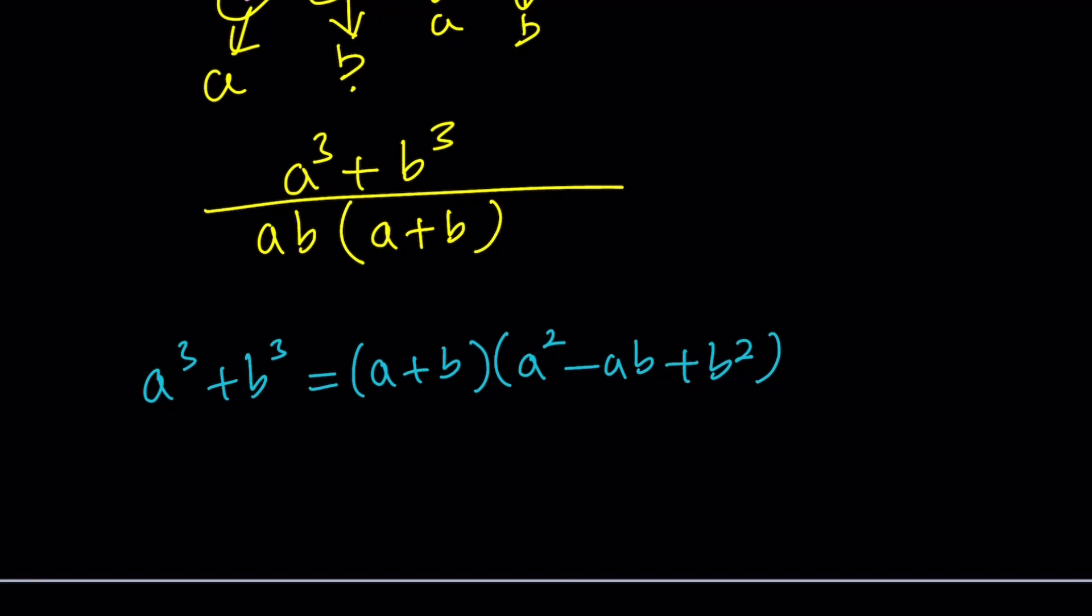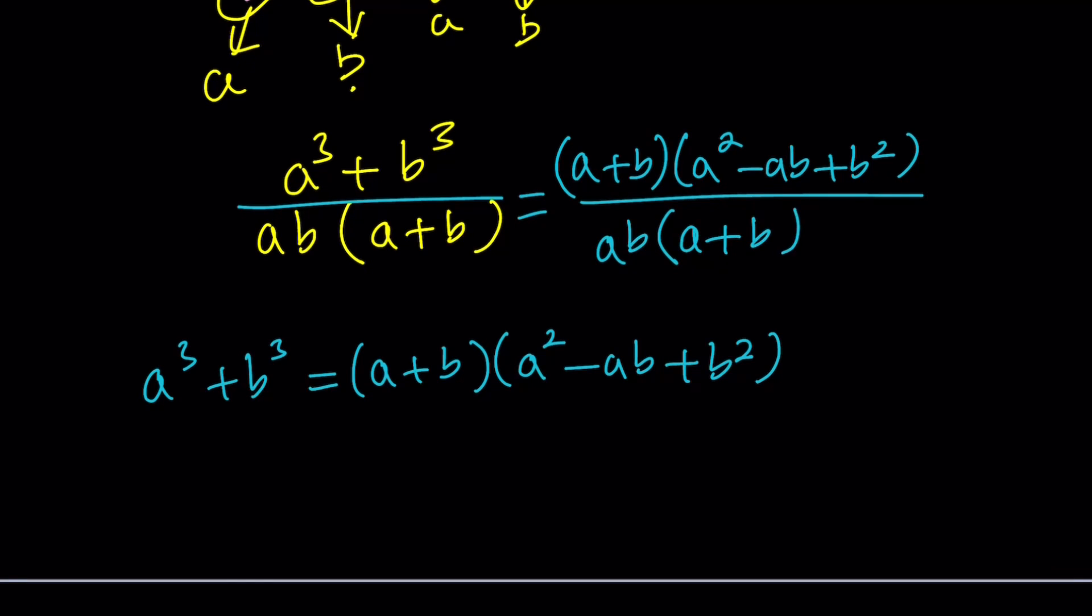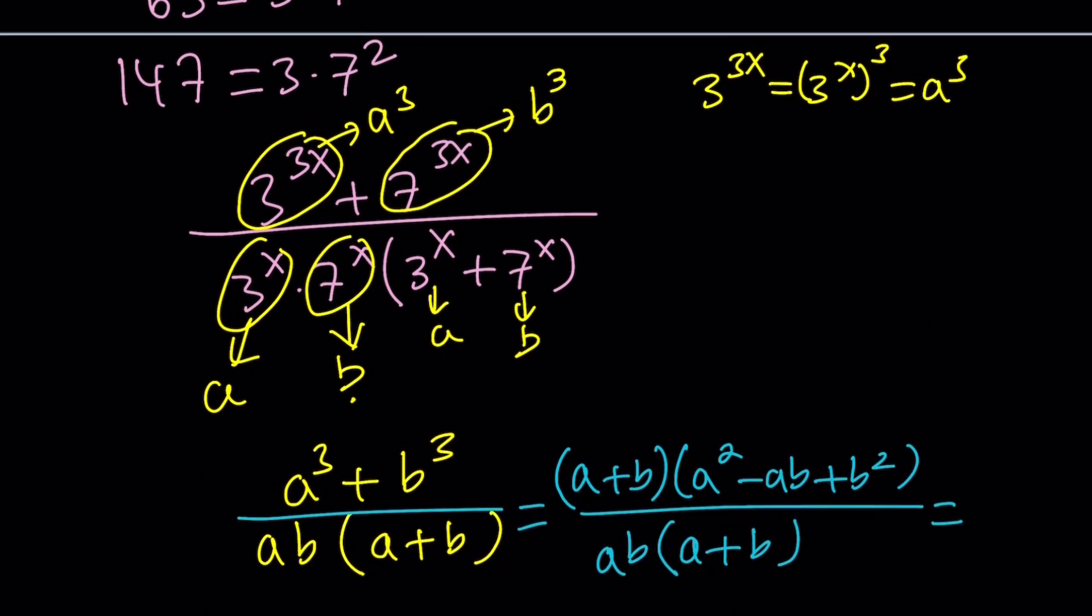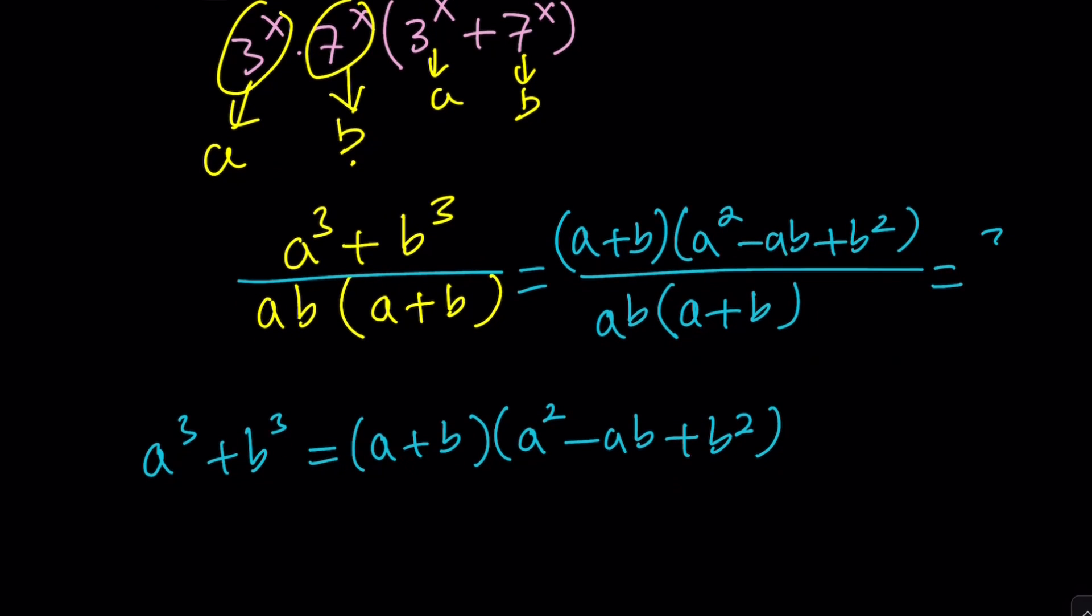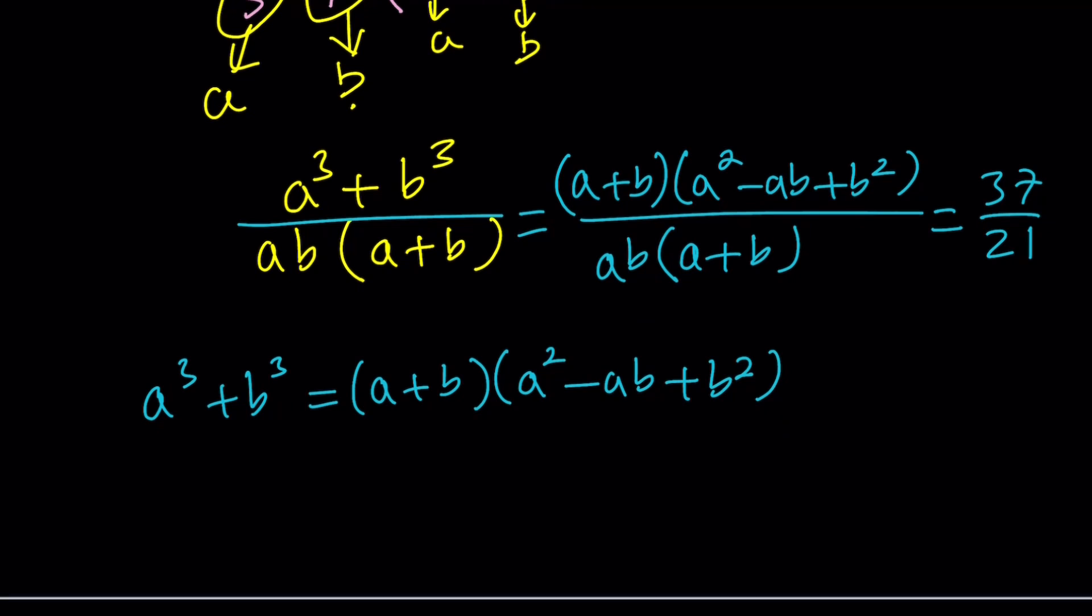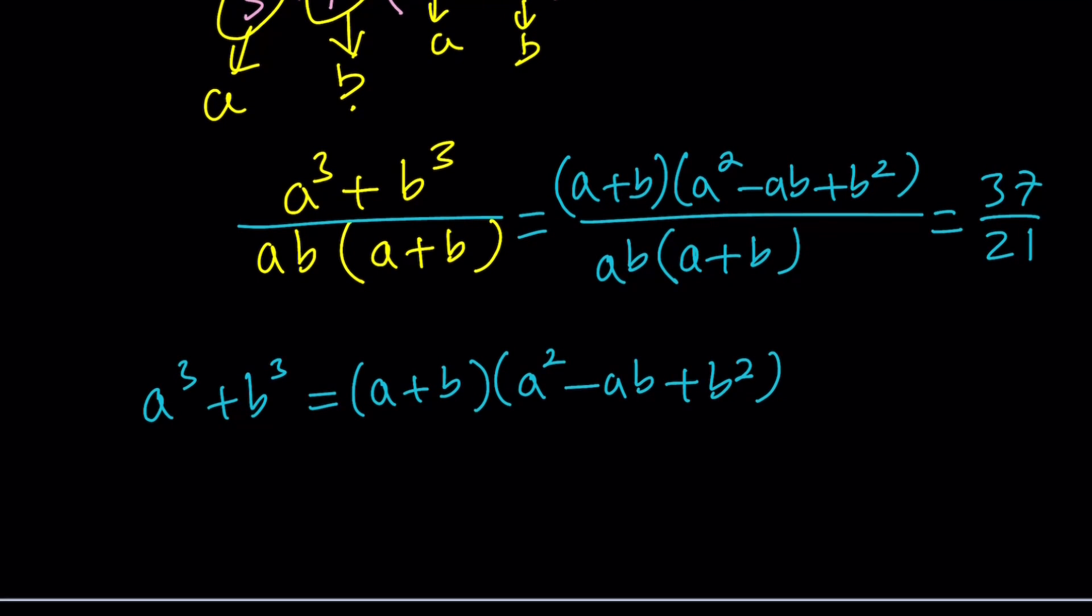Let's write this as (a + b)(a^2 - ab + b^2). In the denominator, I have ab multiplied by (a + b). This is equal to 37/21. That number is going to be important towards the end. And (a + b) cancels out.